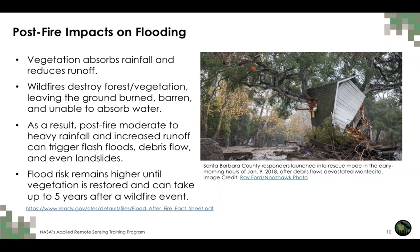There is also increased risk of post-fire disasters. Generally, vegetation absorbs rainfall and reduces or controls runoff. When wildfires destroy forests and vegetation, leaving the ground burned, barren and unable to absorb water, there is usually an increase in runoff during post-fire rain events. Especially during heavy rain, this can trigger flash floods, debris flow, and even landslides. Flood risk remains higher until vegetation is restored, which studies have shown can take up to five years.